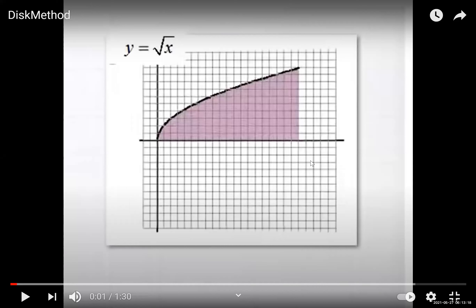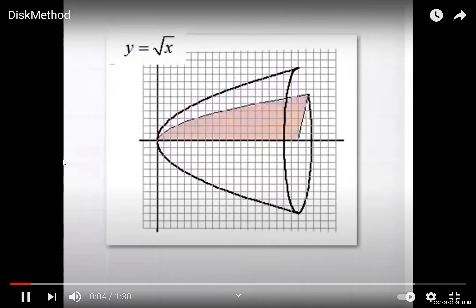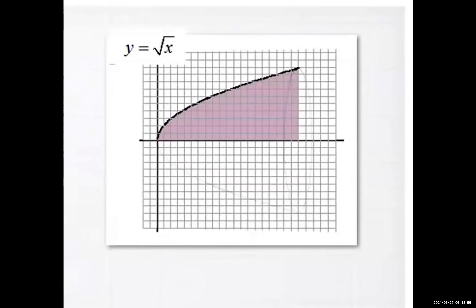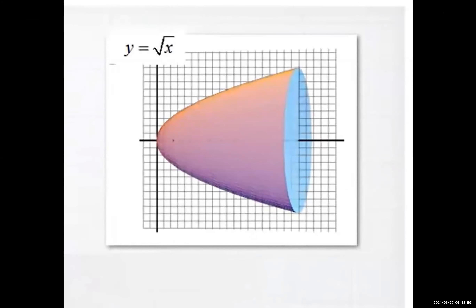Let's suppose this is y equals the square root of x. When you draw that graph and revolve the region about the x-axis, if I revolve that way, this is the solid that I get, and we want to find the volume of this solid.